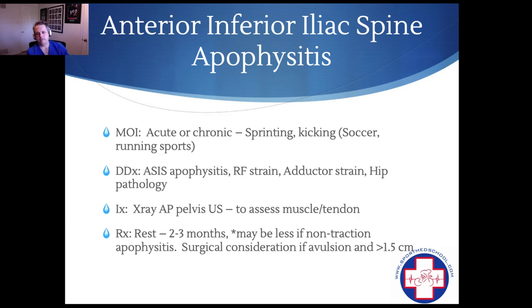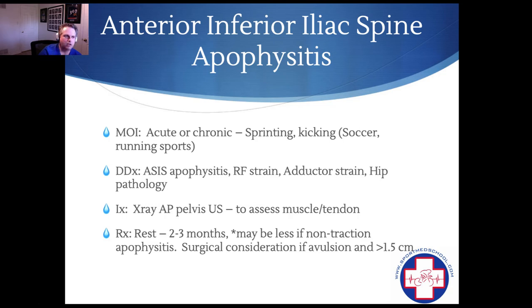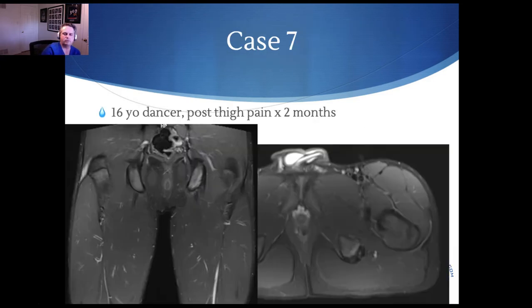For anterior inferior iliac spine apophysitis, because it's a strong proximal muscle injury, you're looking at a longer period of time — months. Generally you don't want to activate any pulling on the apophysis for about four weeks, then gradually progress with rehab. As you get close to three months, you can get back into running activities. Surgical repair is considered at greater than half a centimeter displacement.